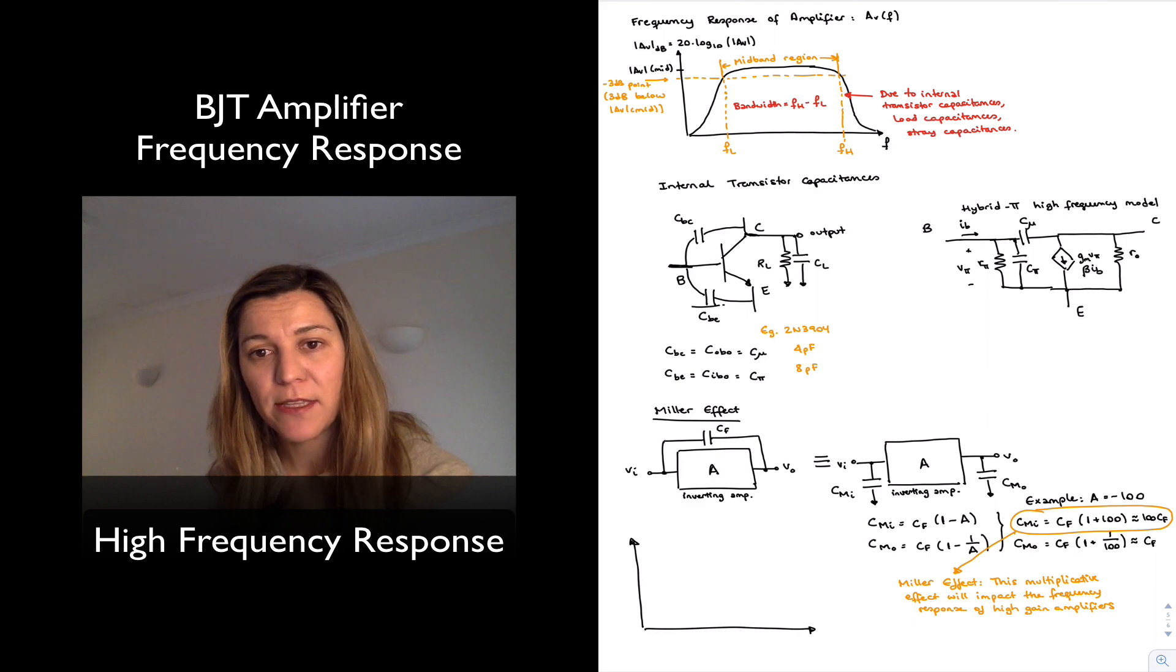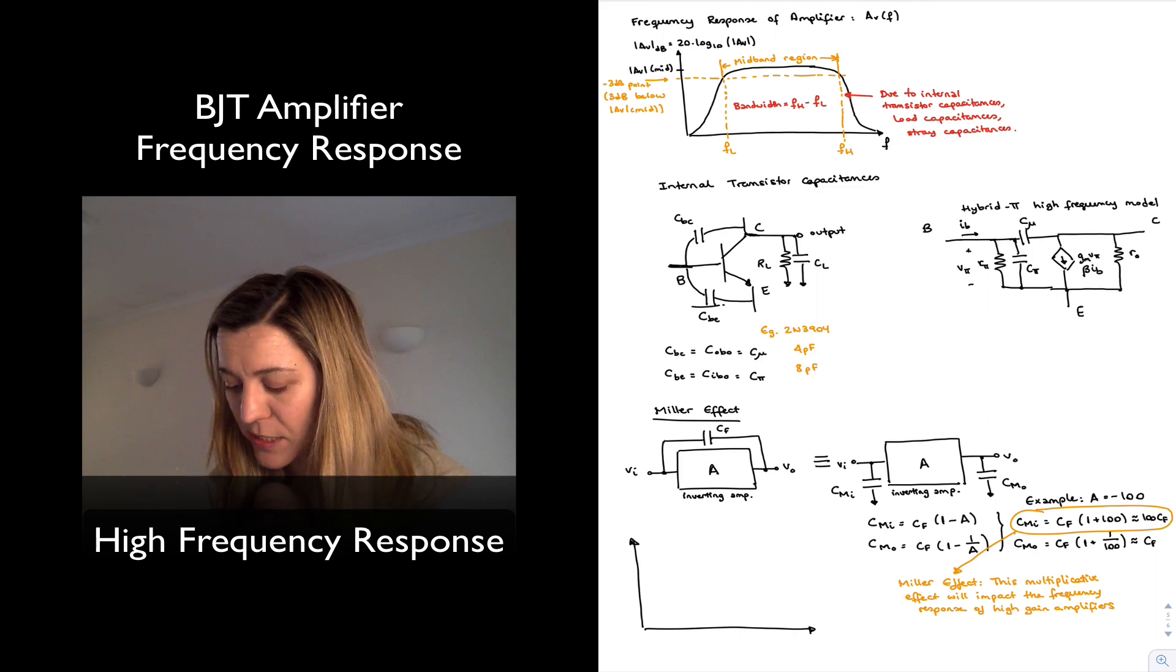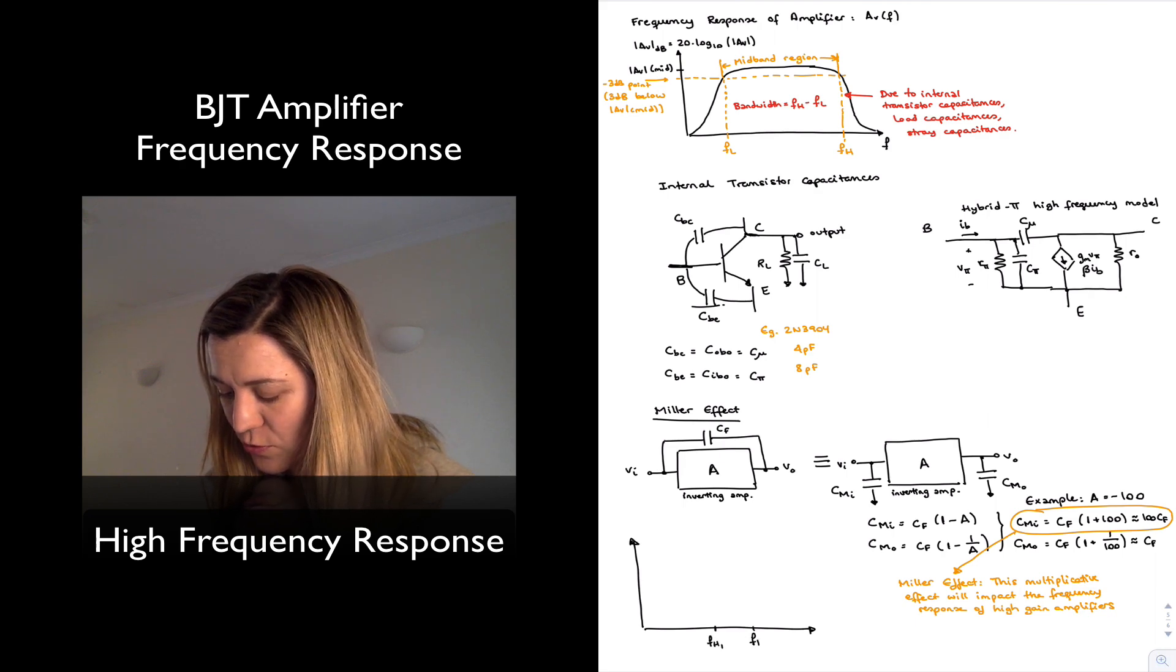Based on the value of the capacitance, and the Thevenin resistance connected across the terminals of that capacitor, while we neglect the effects of the other capacitors. And that's going to give us different values for high cutoff frequencies. One for CBC, let's imagine, you know, this will be FH1, FH2, FH3.